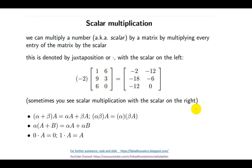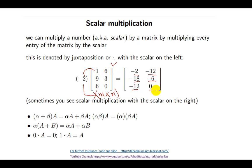The last topic is scalar multiplication. Just as we performed addition, subtraction, and scalar multiplication on vectors, we can similarly multiply a scalar by a matrix. Scalar multiplication means that you have a matrix of any M by N form, and you can multiply any scalar value by it to get the product. For example, we have a 3 by 2 matrix with elements 1, 6, 9, 3, 6, 0, and we multiply by minus 2. Element-wise: minus 2 times 1 is minus 2, times 9 is minus 18, times 6 is minus 12, times 6 is minus 12, times 3 is minus 6, and times 0 is 0.